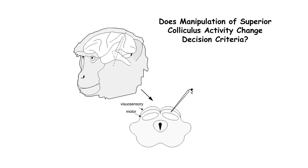Finally, we asked if the superior colliculus signals the position of a decision criterion, then manipulation of collicular activity should produce predictable changes in the position of the decision criterion.